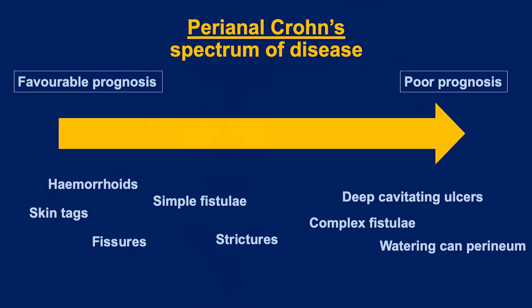Let's start with the basics. What do we mean when we're talking about perianal Crohn's disease? About 54% of patients with Crohn's disease will have some element of perianal disease associated with the condition. It will range from relatively benign conditions such as haemorrhoids or fissures to much more complex disease such as deep cavitating ulcers and watering can perineums at the most extreme end. So Crohn's disease is effectively a perineal condition as well as a luminal condition.